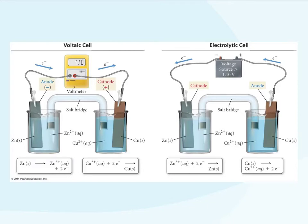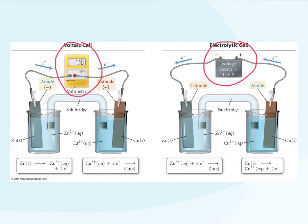What's different is when we look at our setup for our actual voltmeter or voltage source. When we look at a spontaneous process, we're simply measuring the potential difference. Here, we're having to supply that potential difference in order to get that reaction to happen. Voltaic cells are spontaneous; electrolytic cells are non-spontaneous.